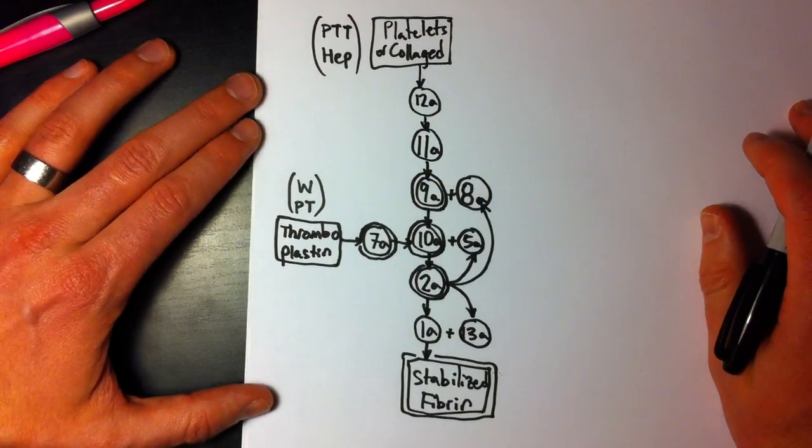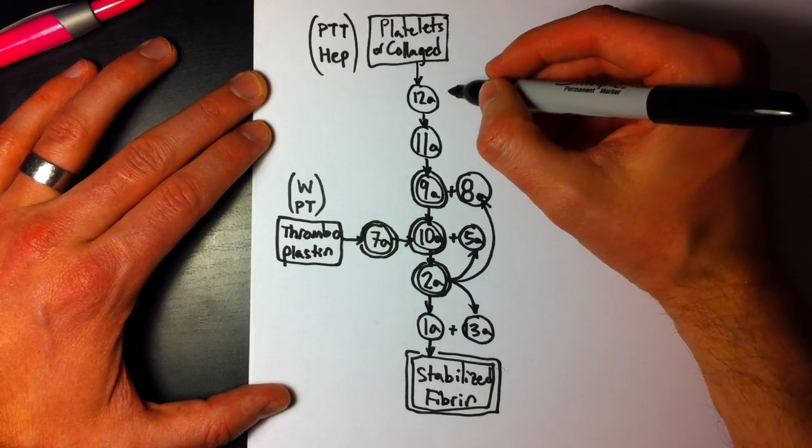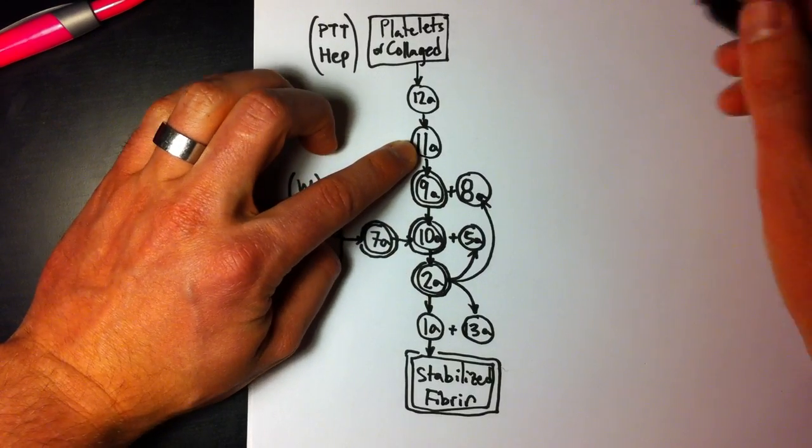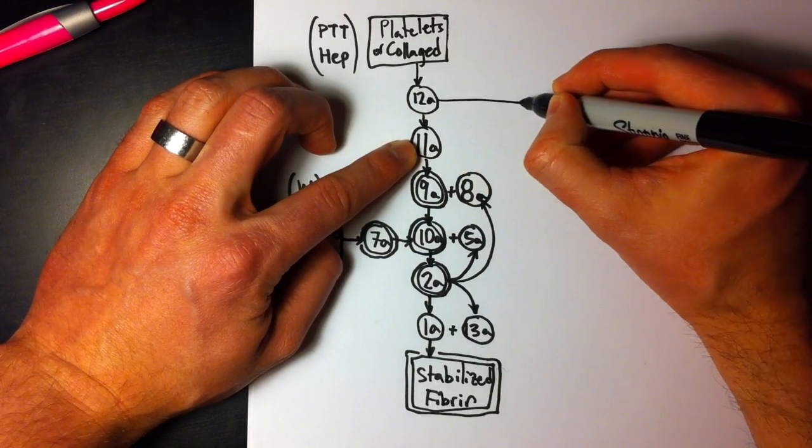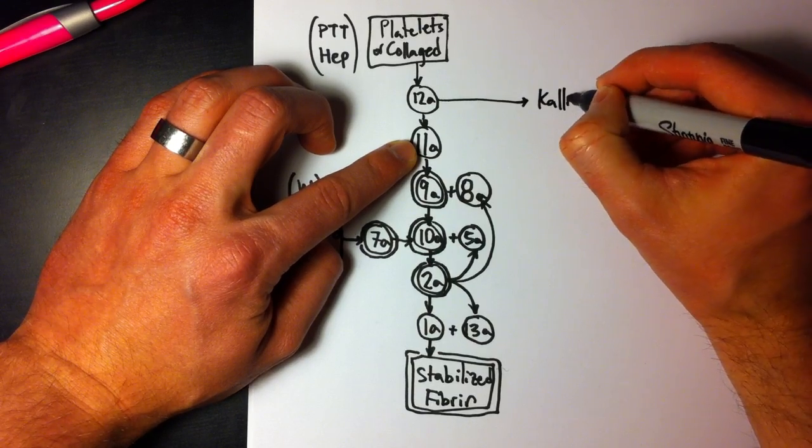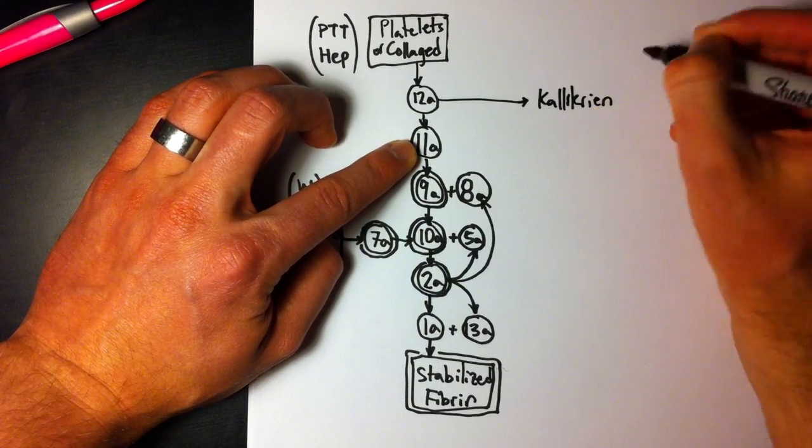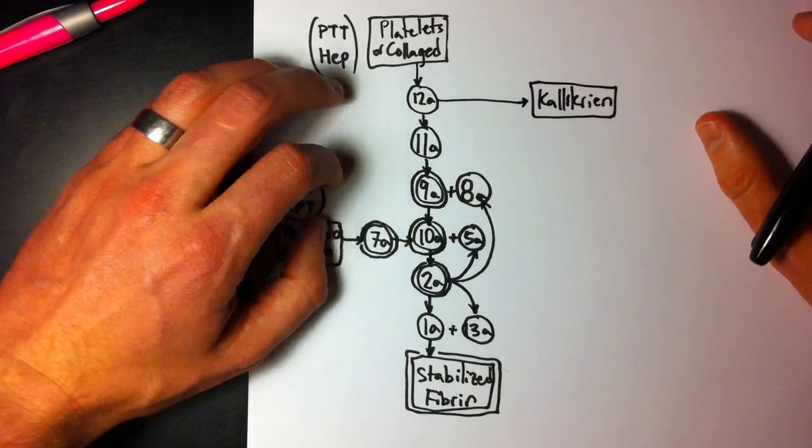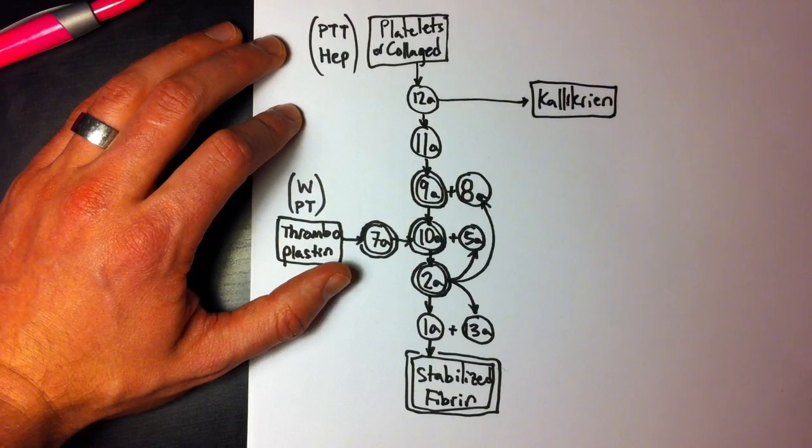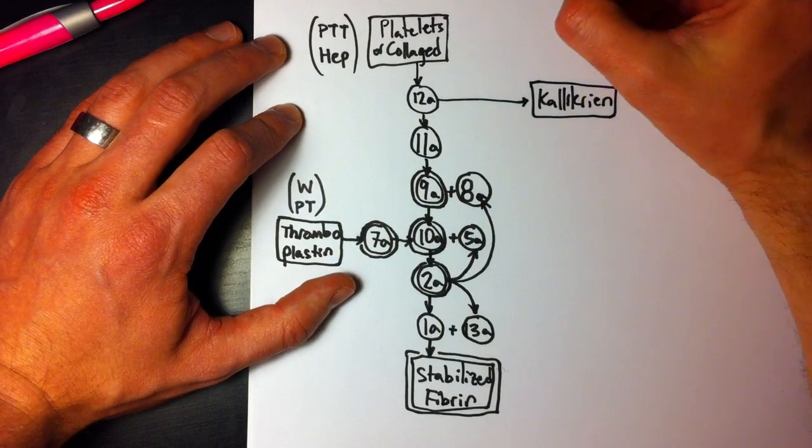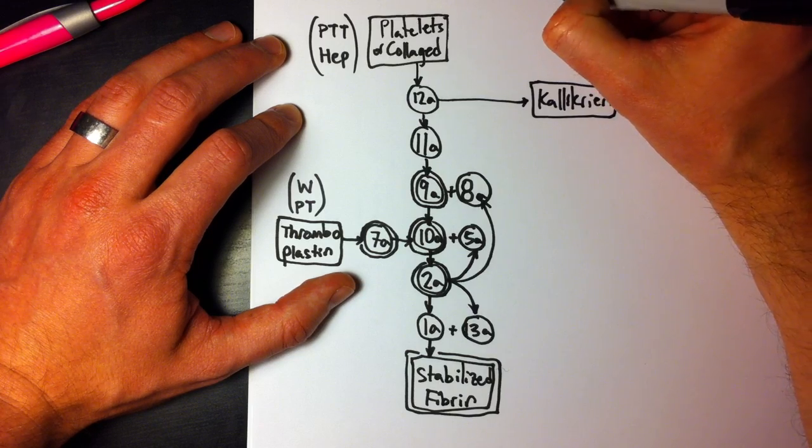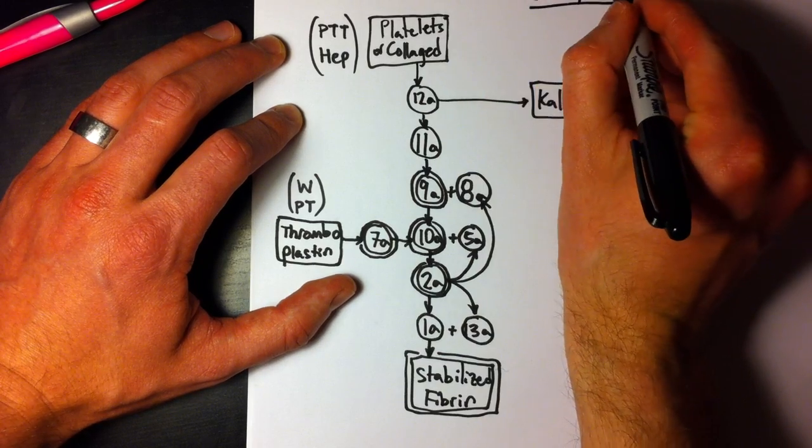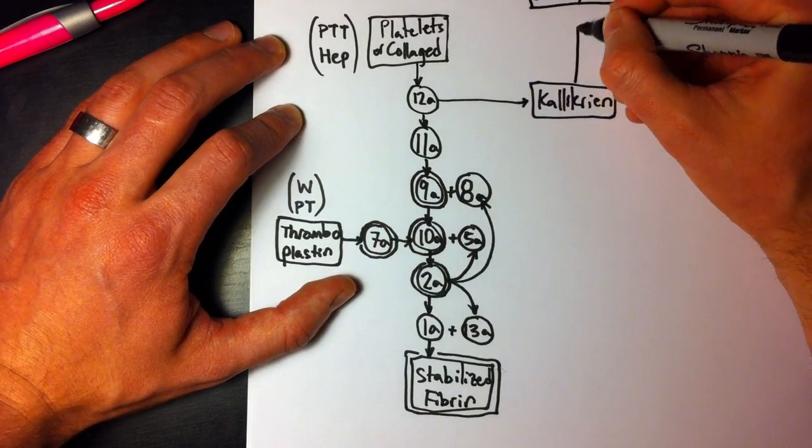So just so we're all on the same page, we'll get started by going from 12. So 12a, besides activating 11 to 11a, also activates kallikrein. Forgive my spelling and writing, I'm making no promises, but you get the idea. Kallikrein has a few functions.